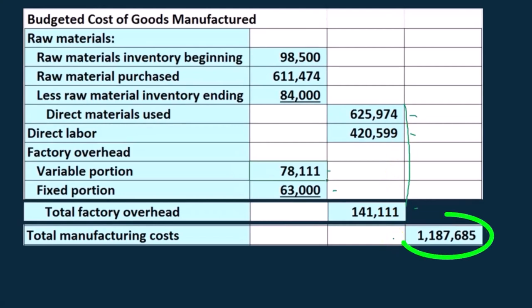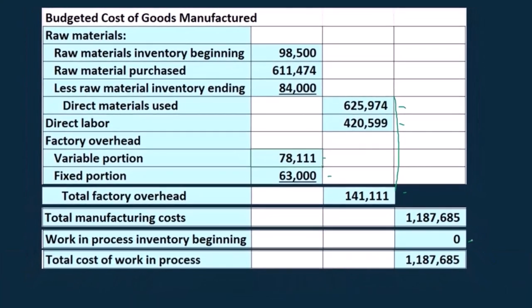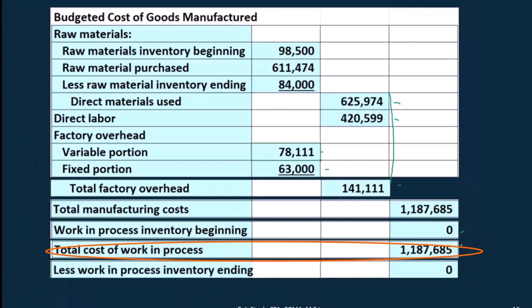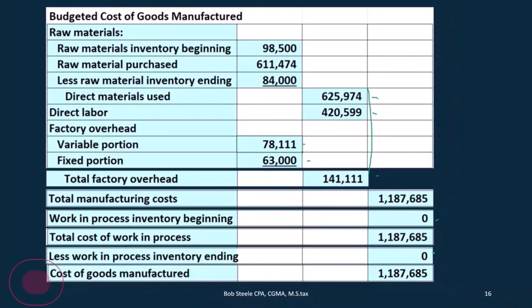We add those three up: $625,975 plus $425,990 plus $141,111, giving us $1,187,685. Work in process at the beginning was zero in this case, but we go through the full calculation. Total work in process equals that same number, and work in process ending inventory is also zero, which gives us our cost of goods manufactured.